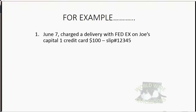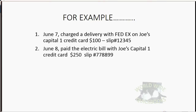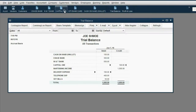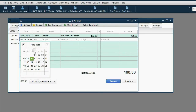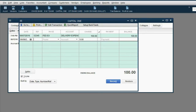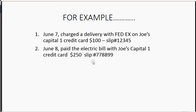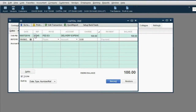Now let's try this one. June 8th, paid the electric bill with Joe's Capital One credit card, $250. The number that came out from the credit card slip was 778899 — that could also be the confirmation number if he paid it online. So in the Capital One register, we'll put June 8th. The reference number is either the confirmation number or the number on the slip: 778899.